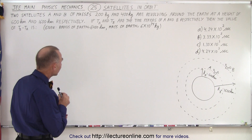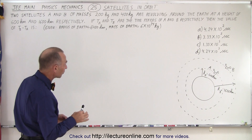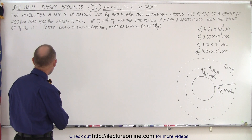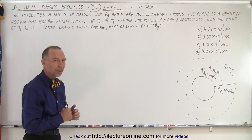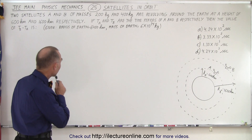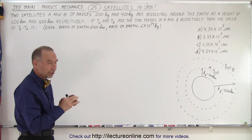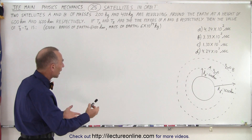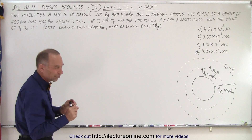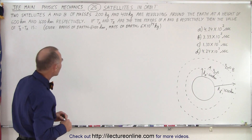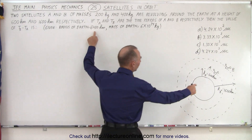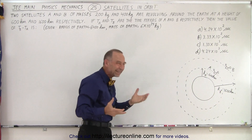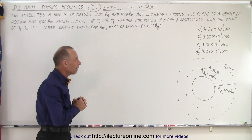If T_A and T_B are the time periods of A and B respectively, then the value of T_B minus T_A is — and they give us four possible answers. They tell us the radius of the Earth is 6400 kilometers and the mass of the Earth is 6 times 10 to the 24 kilograms. Notice that if you add 600 to 6400 you get 7000, and 1600 to 6400 you get 8000, so the numbers are somewhat manageable.